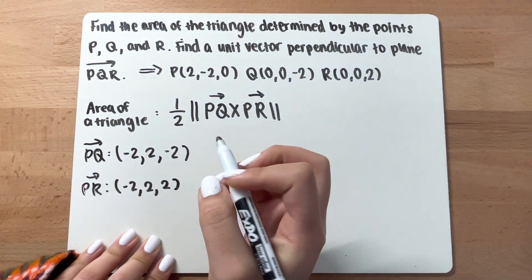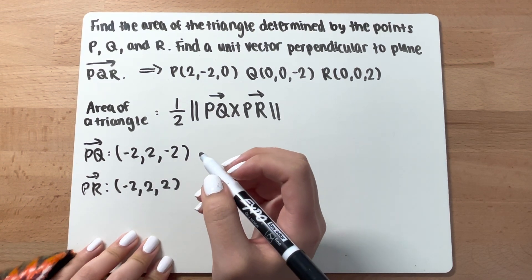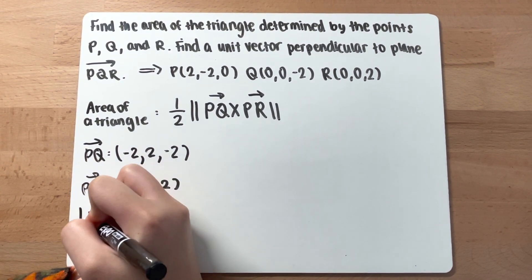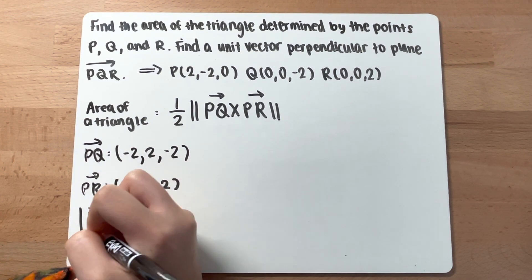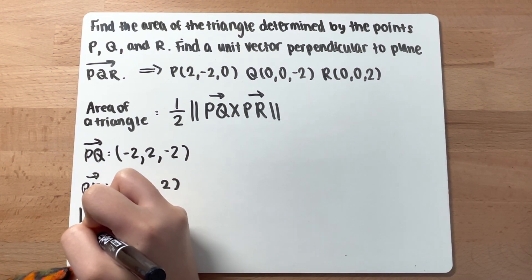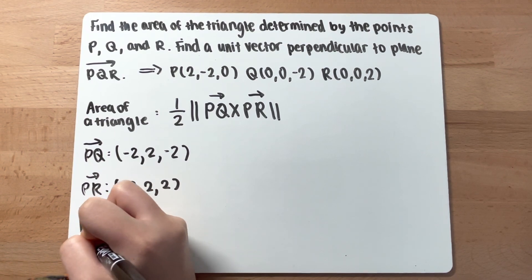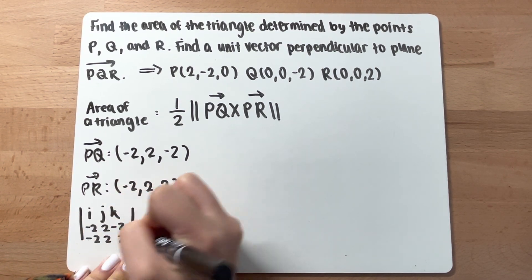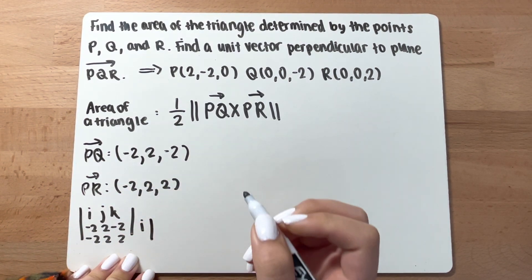Now that you have PQ and PR, you want to find the cross product of the two. Write the PQ terms and then the PR terms, and find the determinants.